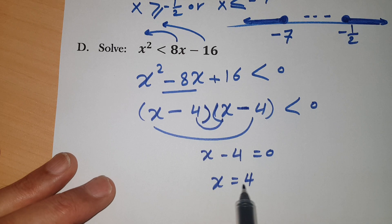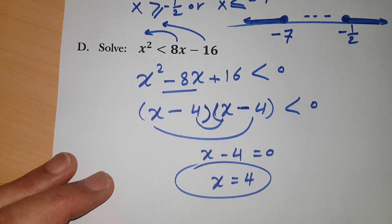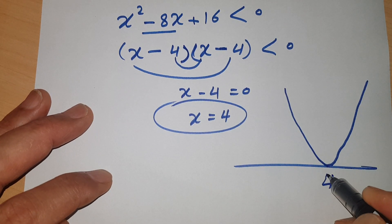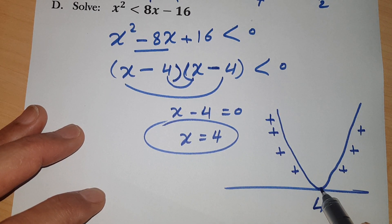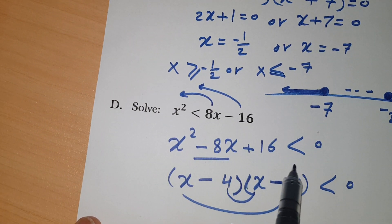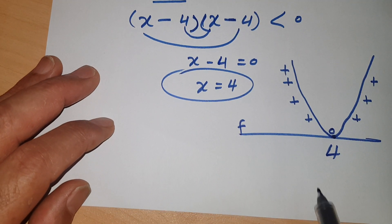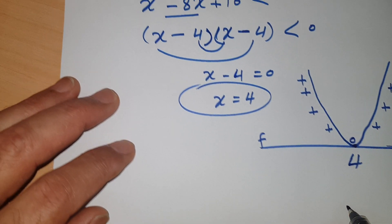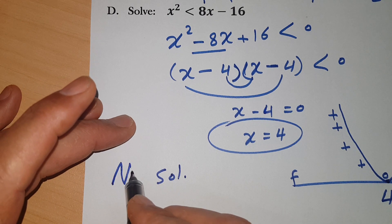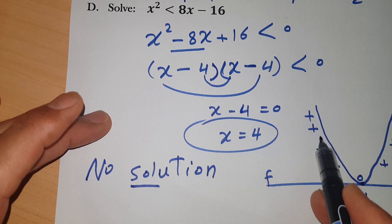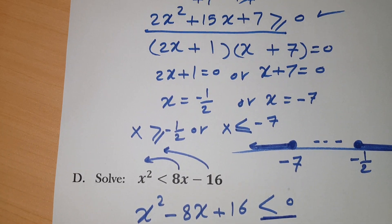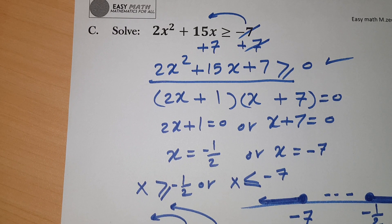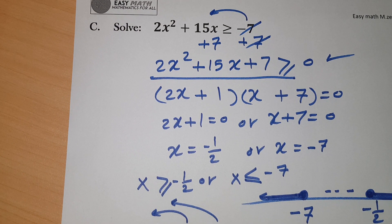When you solve a quadratic equal to zero and get only one root, the curve touches the x-axis at that point and goes back up. This function is entirely positive — it lies above the x-axis — with the function equal to zero only at x = 4. I want the function to be less than zero, but it's never less than zero; its minimum value is zero. Therefore, there is no solution.